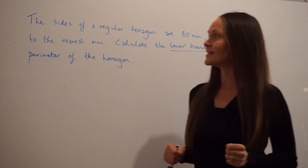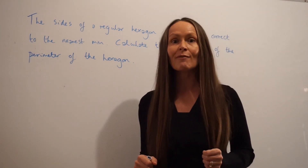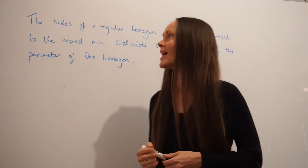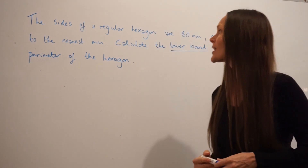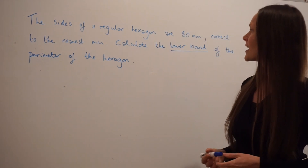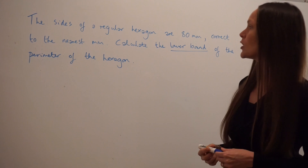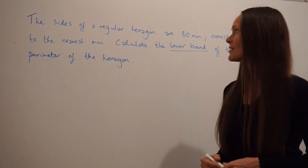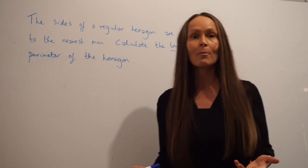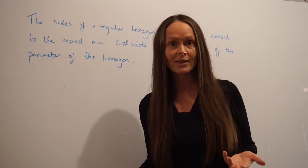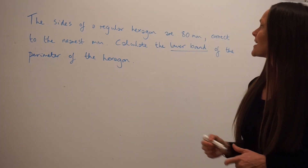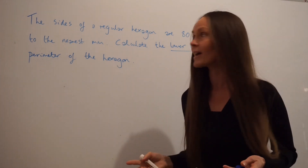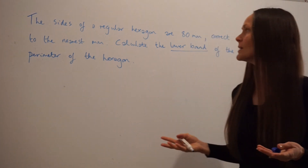Perimeter is the distance around the outside of the shape, so all of the sides added together. In this question they're asking for the lower bound of the perimeter. So a good starting point would be to work out the lower bound of one of the lengths. It says the lengths are 80 millimetres correct to the nearest millimetre.